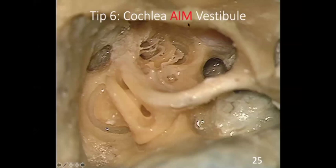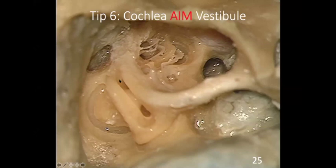The relationship of the cochlea to the vestibule: cochlea is not just anterior but anterior, inferior, and more medial compared to the vestibule. You can see the oval window and facial canal, the first genu, the second genu, and the vertical part of the facial nerve. The cochlea's three turns — basal turn, middle turn, and last turn — are seen here. Remember: cochlea is anterior, inferior, and medial to the vestibule.